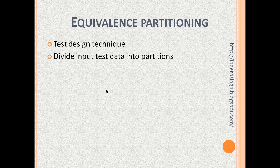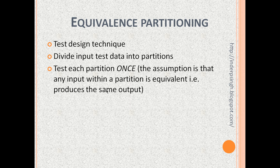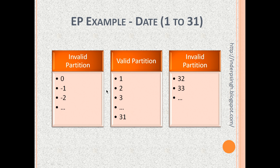Equivalence Partitioning involves dividing the entire possible input range into partitions. The idea is to test each partition once. The assumption is that if you pick a value from an invalid partition, the system should reject that value. If you pick any value from a valid partition, the system should accept that value.